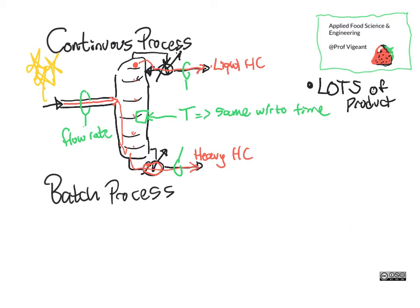And what does 'lots' mean? You're making more than, let's say, 0.25 kilograms per second. That doesn't sound like very much — that's like half a pound a second — but multiply that by how many seconds there are in an hour and this is going to get heavy really fast.